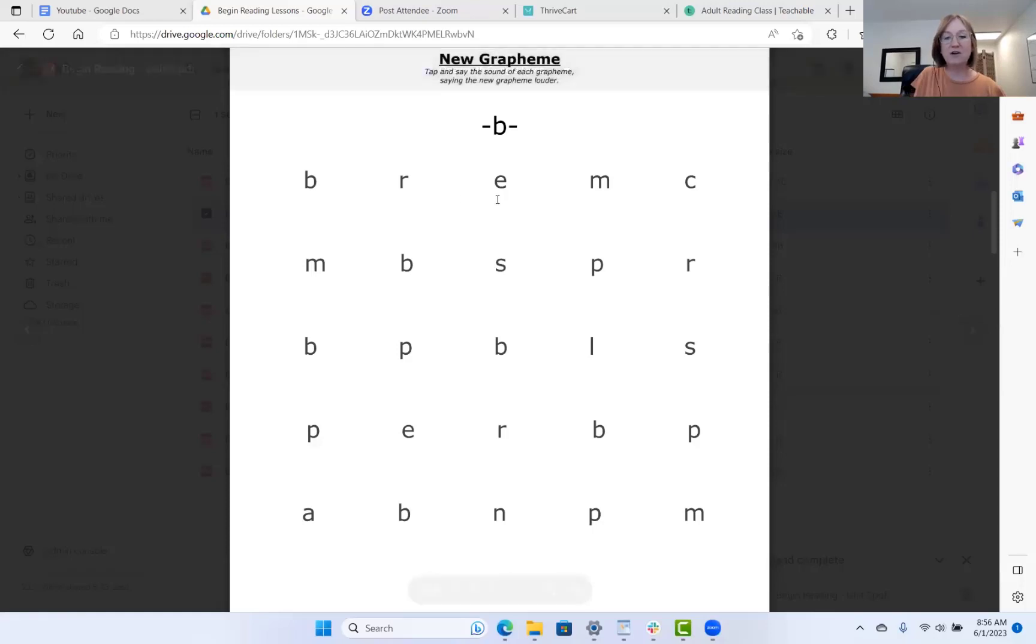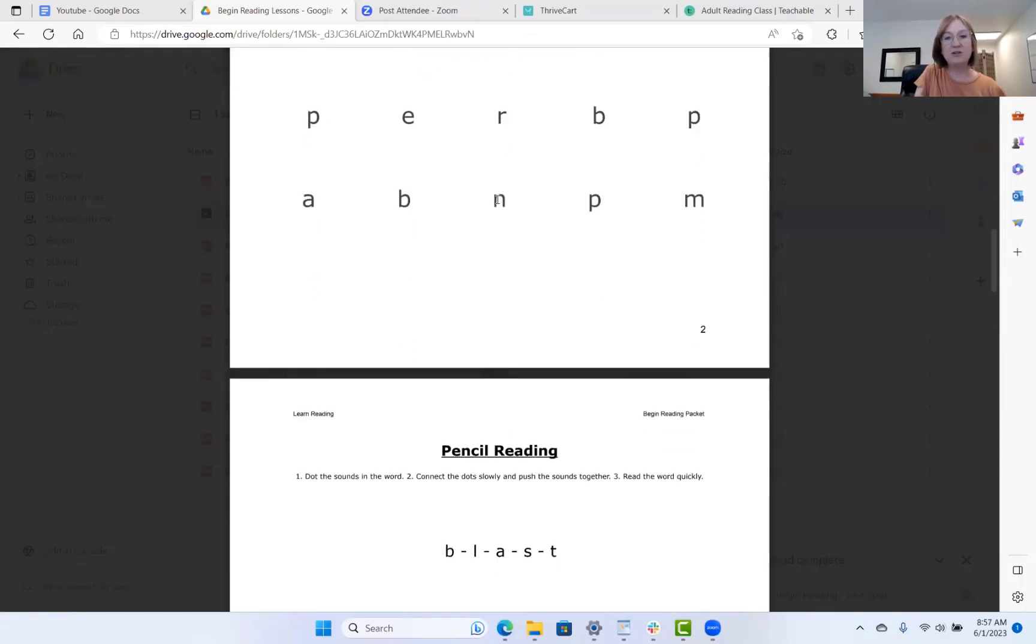And b is a very quick sound. The sound for b is not buh. It's close, but we don't want that uh at the end of it. So the sound for b is not buh. Your jaw doesn't drop. It's just b, b, just a very quick sound. B, b, as fast as you can make it. So if you do have the worksheets, go ahead and practice the clean and crisp sounds of all of these graphemes. And then I'll meet you down on page three.